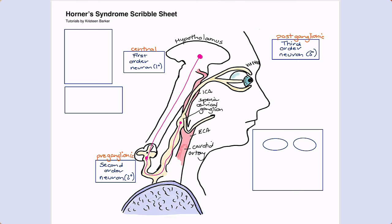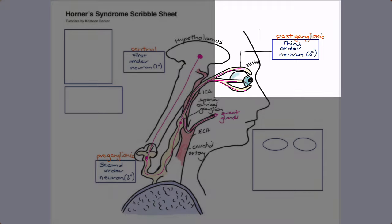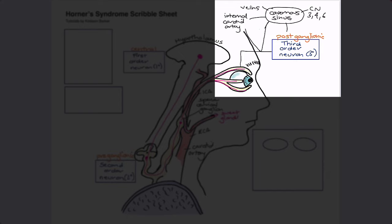Leaving this ganglion are the third-order neurons, which have a choice of two possible paths. Some will branch off to innervate the sweat glands on that side of the face, and others will innervate the eyeball. Those destined for the eyeballs travel alongside the internal carotid artery through the cavernous sinus, which contains veins, the internal carotid artery, the third-order sympathetic neuron, and cranial nerves 3, 4, and 6 — basically the eyeball movement nerves.